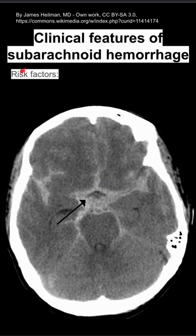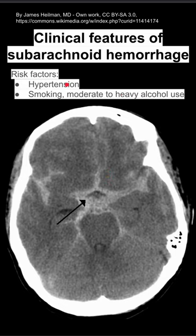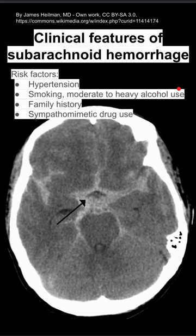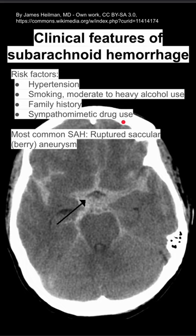These are the clinical features of subarachnoid hemorrhage. First, the risk factors. Risk factors are hypertension, smoking, moderate to heavy alcohol use, family history, and sympathomimetic drug use. That includes drugs like cocaine and amphetamines.